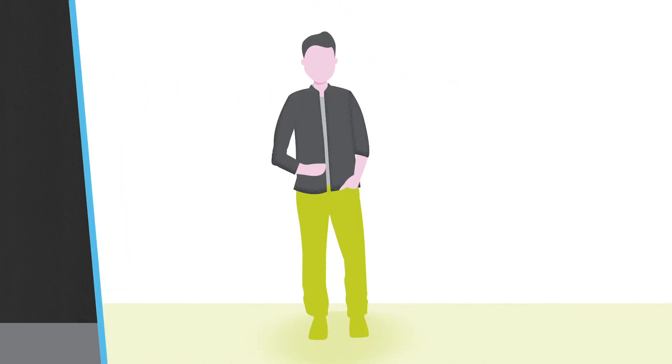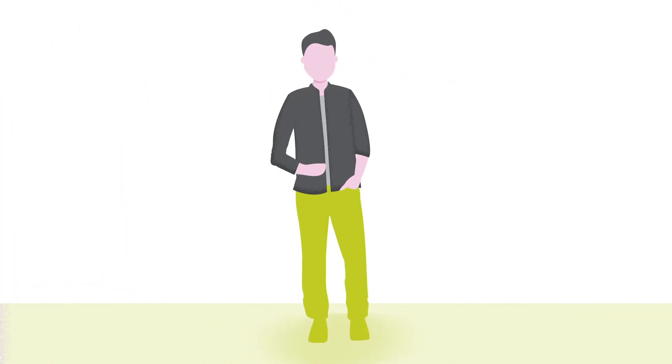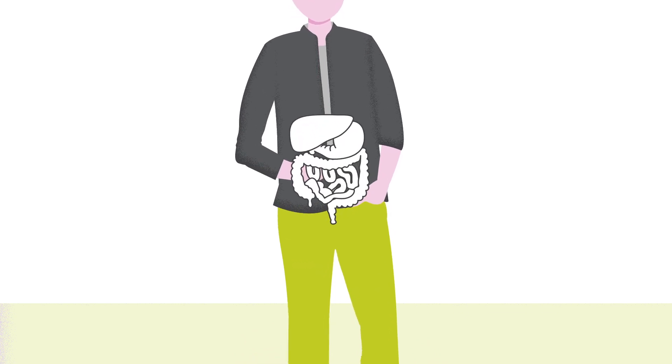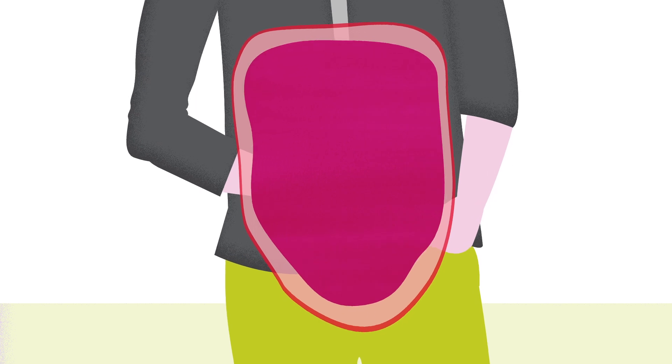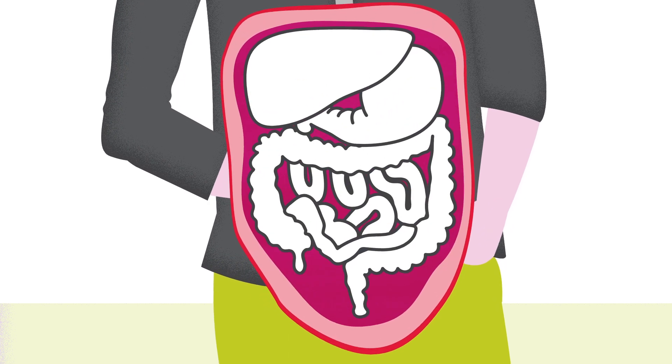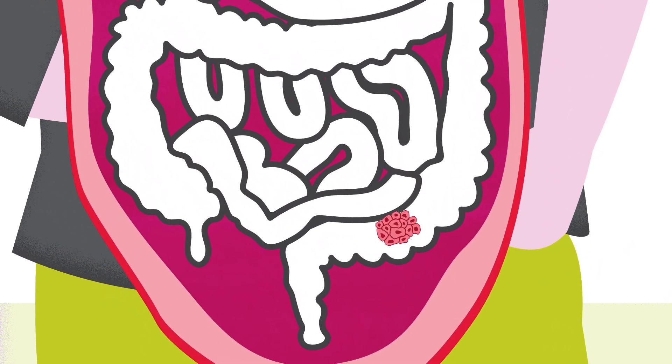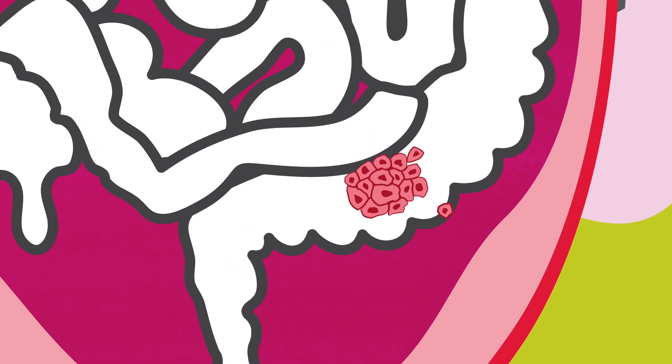But first, a short anatomy lesson. Did you know that the organs within the abdomen are enclosed in a big sack to keep them safe? This creates a space where the organs all sit comfortably, but also means that when cancerous cells break free, they can adhere to the lining of the sack or other organs, or float freely within that space.